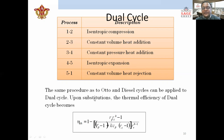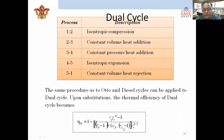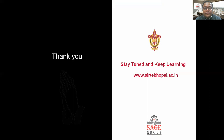Applying that procedure, the thermal efficiency of the dual cycle is: η = 1 - (1/r^(γ-1)) × [(rp × rc^γ - 1) / ((rp - 1) + γ × rp × (rc - 1))], where rp is the pressure ratio, rc is the cutoff ratio, γ is the ratio of specific heats, and r is the compression ratio. This is the thermal efficiency of the dual cycle. Thank you — this concludes the lecture on the diesel and dual cycles and their thermal efficiencies. If you have any doubts, please ask.